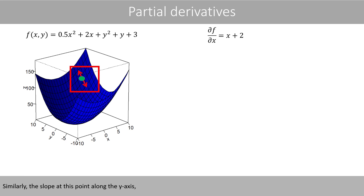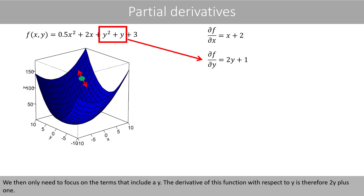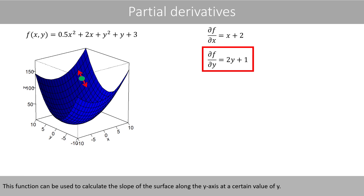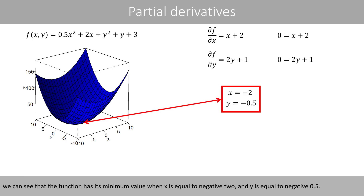Similarly, the slope at this point along the y-axis can be obtained if we calculate the derivative of this function with respect to y. We then only need to focus on the terms that include a y. The derivative of this function with respect to y is therefore 2y plus 1. This function can be used to calculate the slope of the surface along the y-axis at a certain value of y. If we set the left-hand sides to 0 and solve the equations for x and y, we can see that the function has its minimum value when x is equal to negative 2 and y is equal to negative 0.5.